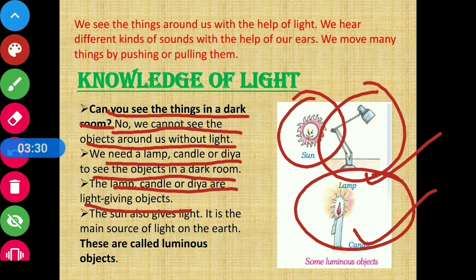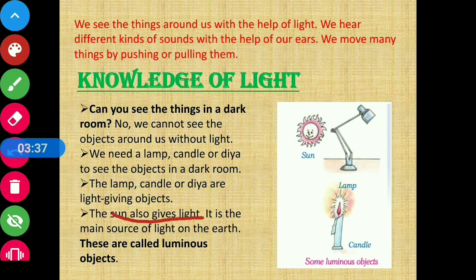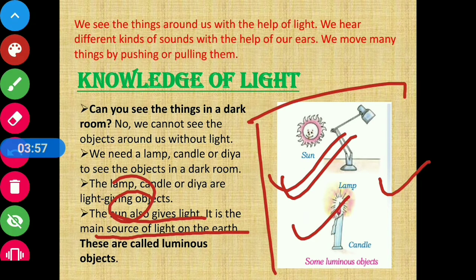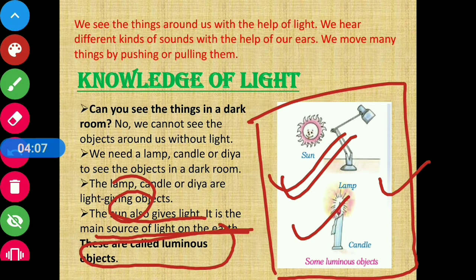So these are light-giving objects. The sun also gives us light — Sooraj bhi hame light deta hai. It is the main source of light on the earth — humare earth ka main source hai light ka, that is the sun. Now all these objects — sun, lamp, or candle — in sab cheezein jo khud se light deti hain, un sab cheezein ko kaha jata hai luminous objects. These are called luminous objects.